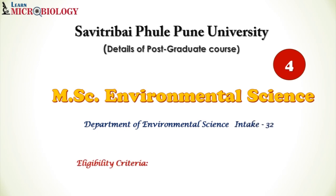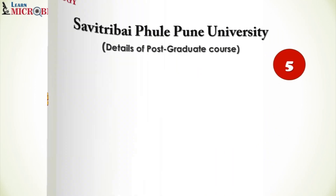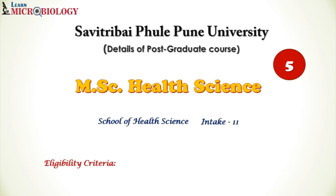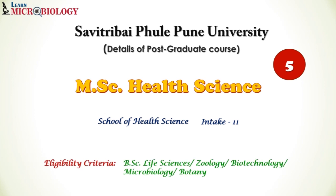The eligibility criteria for MSc Environmental Science is students with any BSc degree. Moving on to course number five, MSc in Health Science. This is also a very interesting course offered by the School of Health Science with an intake capacity of 11 students. The eligibility criteria is BSc in Life Science, Zoology, Botany, Microbiology, or Biotechnology.